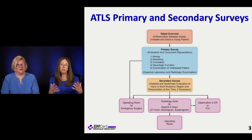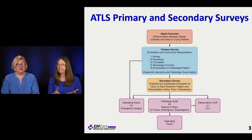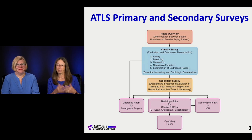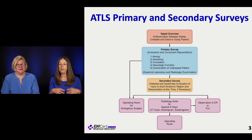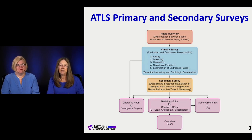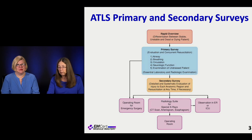The primary survey is the things we all remember from learning ATLS: Airway, Breathing, Circulation, Disability — which is neurologic function — and then Exposure: make them naked. So that's A, B, C, D, E — the initial primary survey.